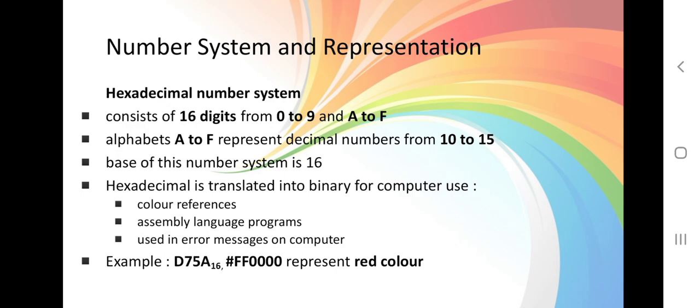Meanwhile, what is hexadecimal? Hexadecimal represents digits from 0 to 9 and A to F. Alphabet A to F actually represents decimal numbers from 10 to 15. 0 to 9, we use normal numbers.